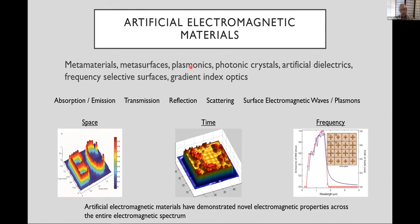So metamaterials are a subclass of a broader category of artificial electromagnetic materials. We think of metamaterials as both metamaterials and metasurfaces. Also, there are materials such as plasmonics, photonic crystals, artificial dielectrics, frequency selective surfaces, and so on. And all of those can be broadly described as artificial electromagnetic materials.